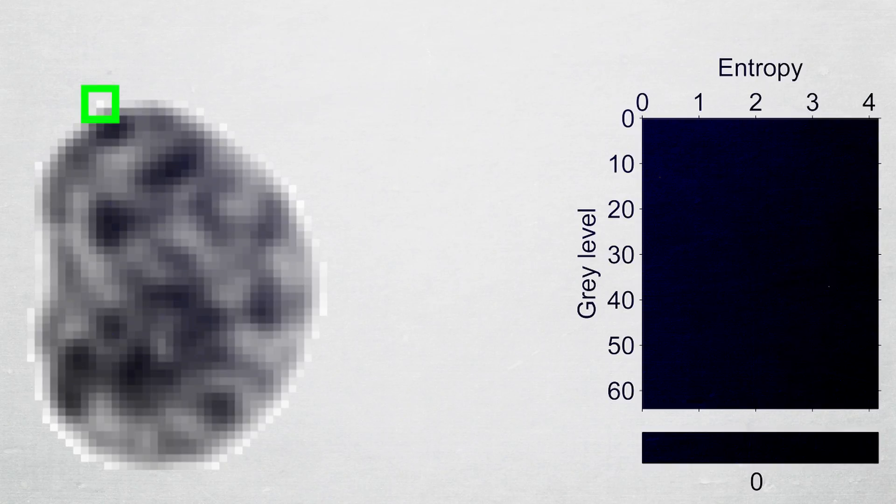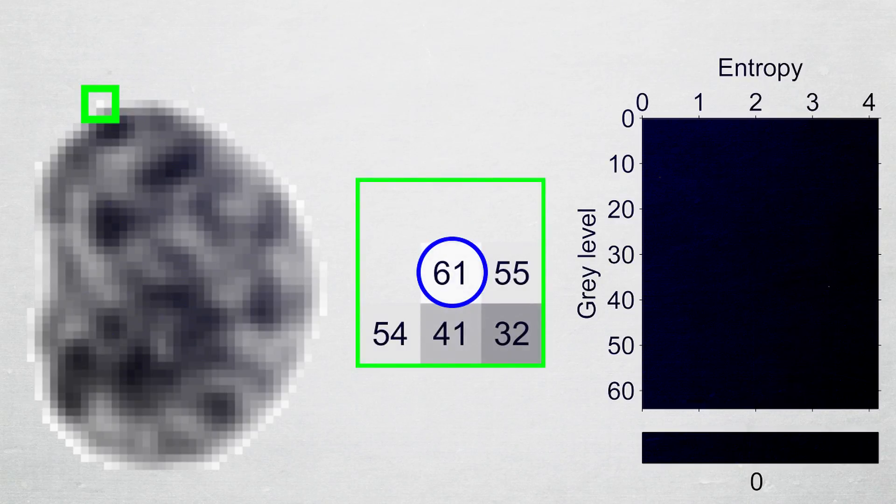A square window is centered at the leftmost pixel on the first row. In this instance, the window size is 3 by 3.